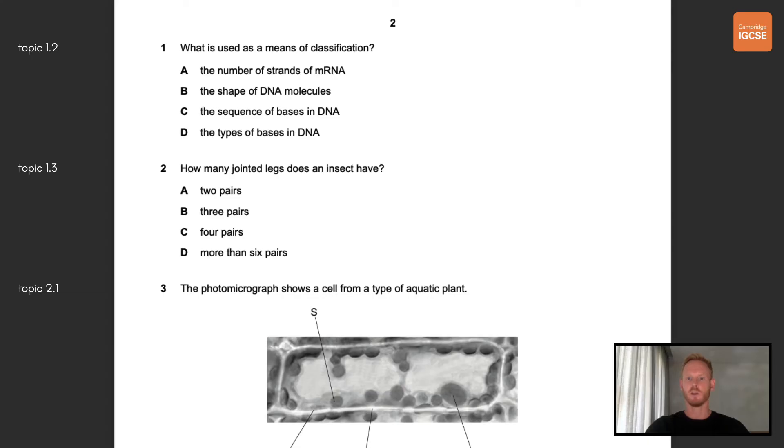Question number one, what is used as a means of classification? Classification in this context means arranging organisms into groups by the features that they share. The correct answer here is C, the sequence of bases in DNA are used as a means of classification. Number two, how many jointed legs does an insect have? Insects have three pairs of jointed legs so the correct answer is B.